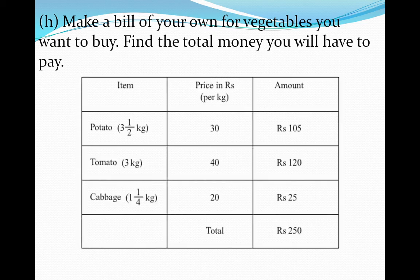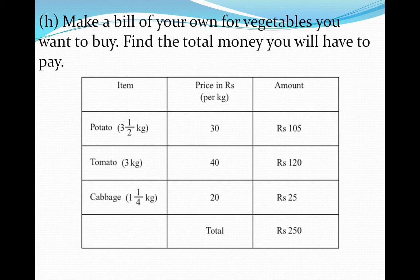The first item is potato and I want to buy 3.5 kg. The price of 1 kg potato is Rs. 13, so the total amount of potato is Rs. 105. The next item, I want to buy tomato 3 kg and the price of 1 kg tomato is Rs. 14, so the total amount of tomatoes is Rs. 120. Now I want to buy 1 and 1/4 kg cabbage and the price of 1 kg cabbage is Rs. 20, so the total amount of cabbage is Rs. 25. So the total amount of vegetables is Rs. 250. As like that, you can make a bill of your own for vegetables that you want to buy.